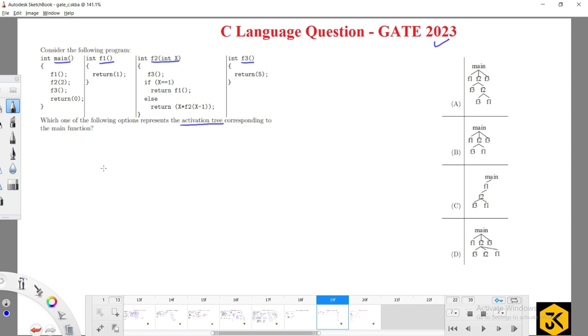We have seen various kinds of examples earlier. The program starts execution from the main method which is again calling f1 function. See, we have to draw the structure: main function which is calling f1 function.